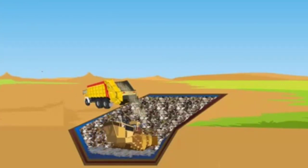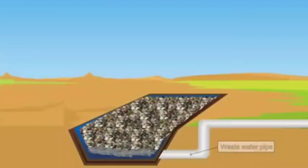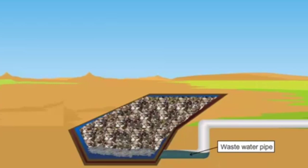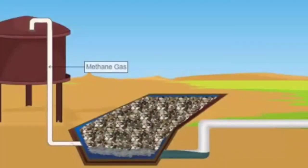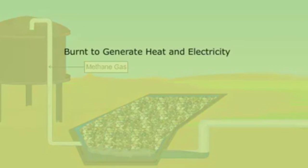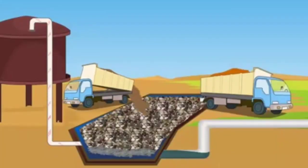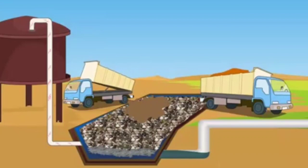The wastes are crushed using a specialized crushing machine. A pipe is also fitted so that liquid waste produced after decomposition can be separated and taken out. Another pipe is fitted where methane gas from the decomposition of waste can be stored in a tank, and the heat generated can be converted into electricity.